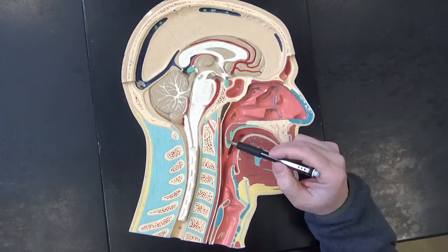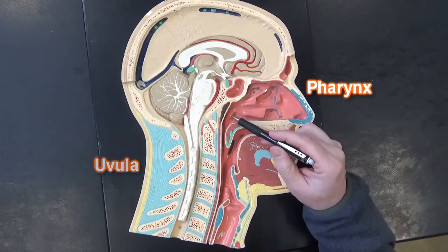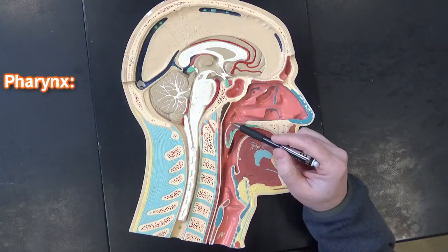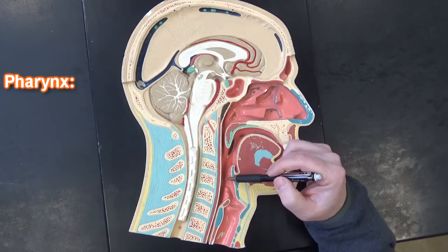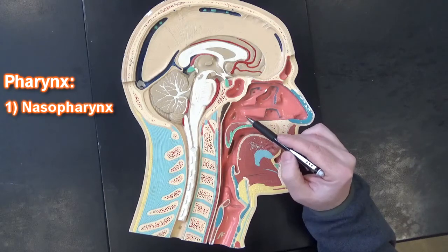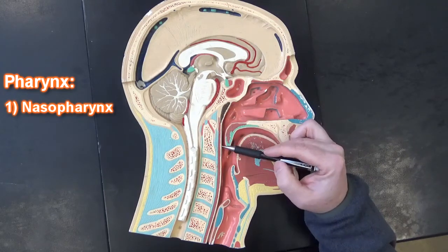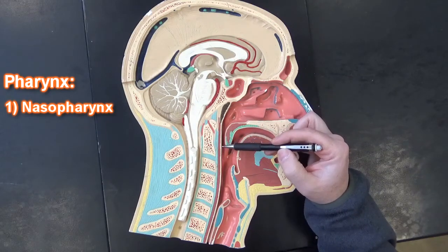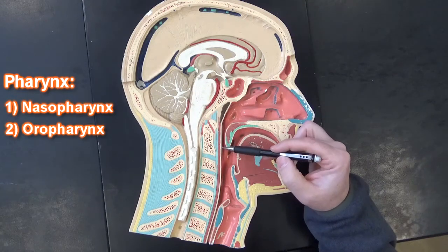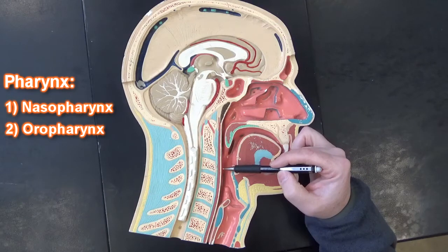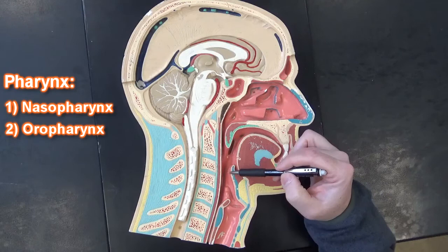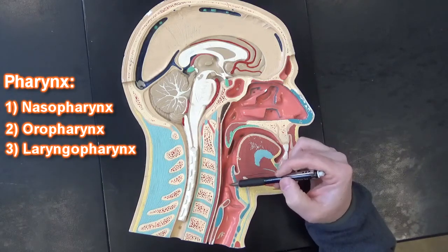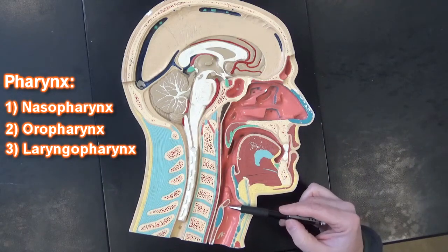Here we've got the soft palate and the uvula. Our pharynx is going to be back here, and the pharynx is divided into three regions. We've got the nasopharynx from the internal nares to the end of the soft palate. The oropharynx is going to be from the end of the soft palate down to the level of the hyoid bone. Then the laryngopharynx is going to be below the hyoid bone up to the vocal folds.